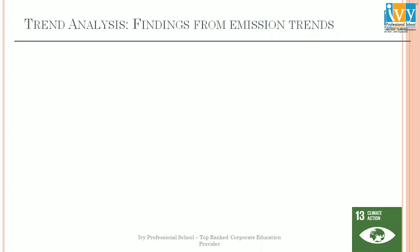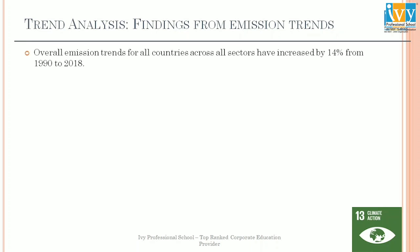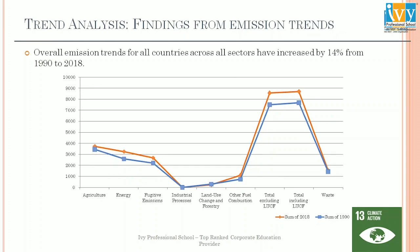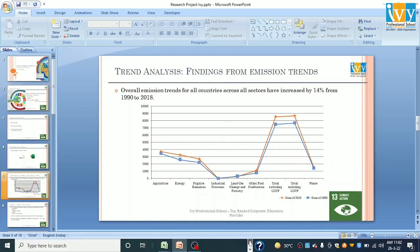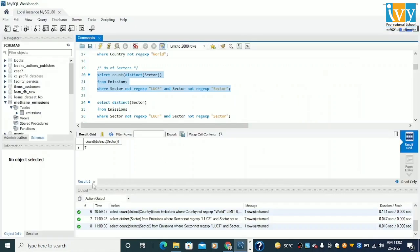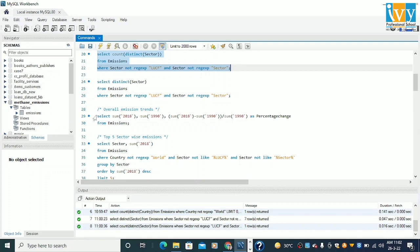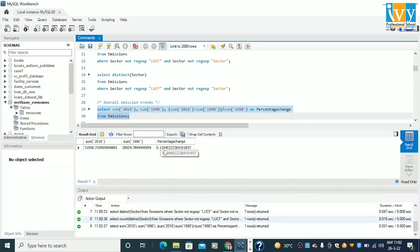Moving to trend analysis and findings from emission trends: overall emissions have increased by 14 percent from 1990 to 2018 — we are talking about methane emissions here. As you can see from the chart, the orange line shows 2018 and the blue line is 1991. Let me show you the SQL queries for this one. For overall emission trends, we can get the percentage — this is 0.139, that is approximately 0.14, which is 14 percent increase.